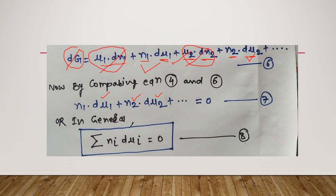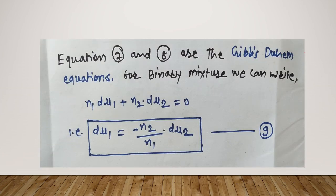This is the important equation and it is known as the Gibbs-Duhem equation. Rearranging, equations 7 and 8 are both forms of the Gibbs-Duhem equation.